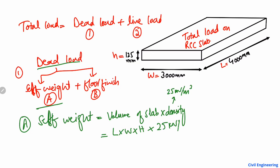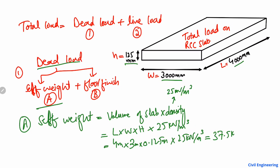The volume of the slab is length multiplied by width multiplied by height, then multiplied by the density of 25 kilonewton per cubic meter. The length is 4 meters, width is 3 meters, and the height is 0.125 meters. Multiplying these gives the self-weight of the slab as 37.5 kilonewton.